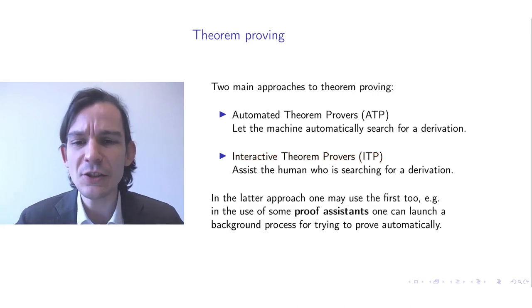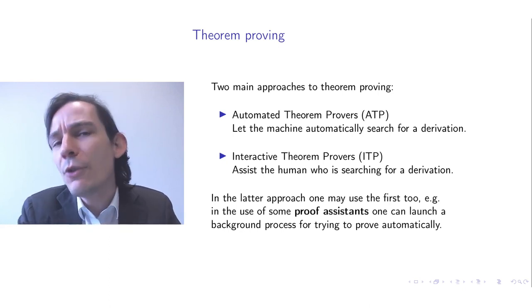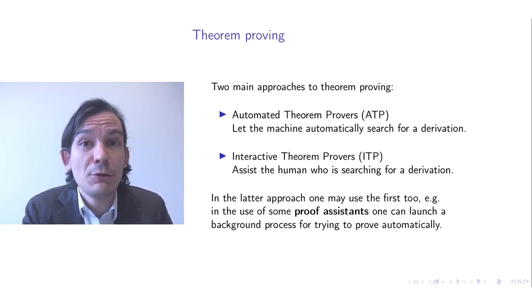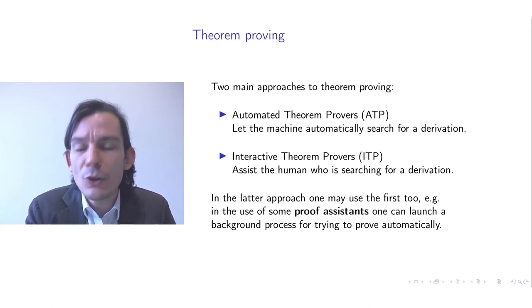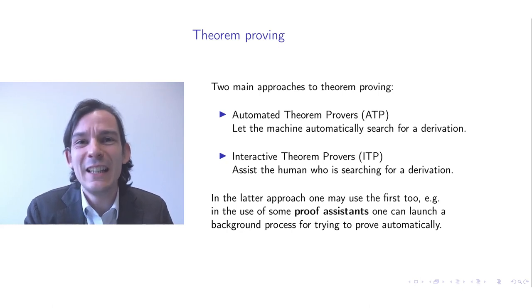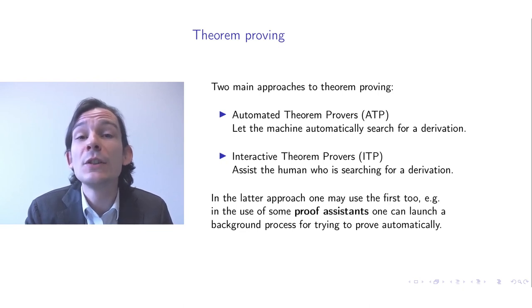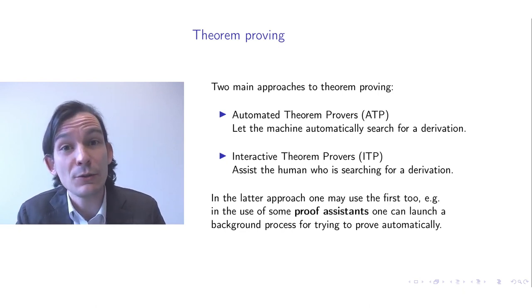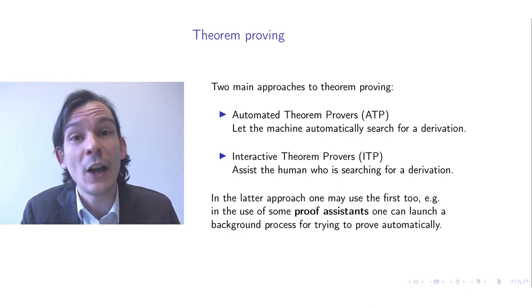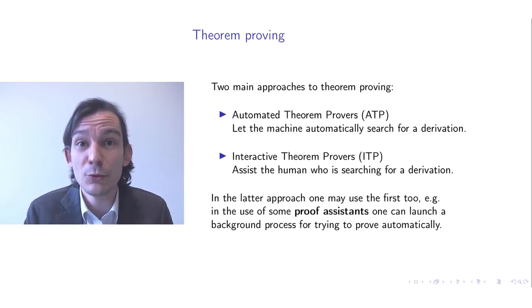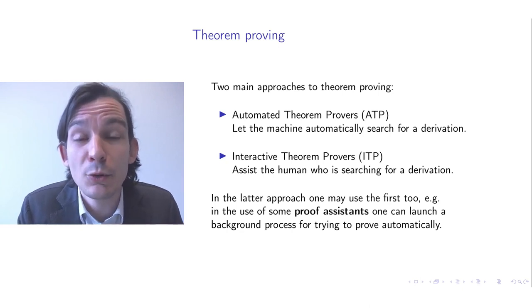When you use proof assistants, you can also make use of automated techniques. Certain trivial results, for instance symmetry of equality, could be automatically proven, but also for certain subclasses of formula, as you have seen in the previous video, automatic techniques can be applied to find a proof. This is useful because it removes some of the tediousness in finding proofs. But in the case that automatic theorem proving fails, or does not give a timely result, the human can still steer the proof process towards finding a proof. That is why Interactive Theorem Proving is useful.